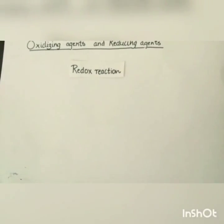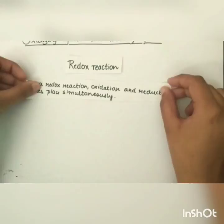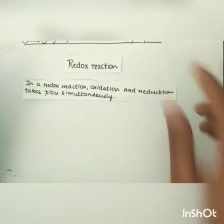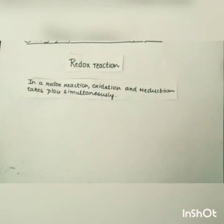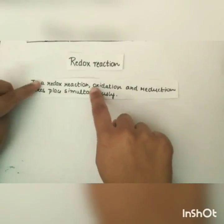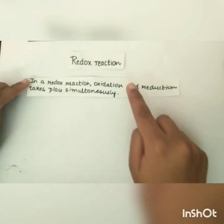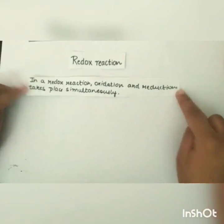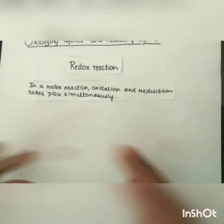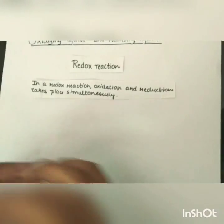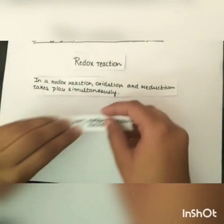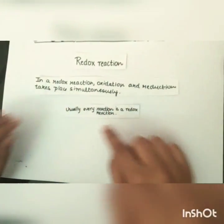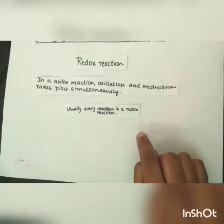Now let's talk about redox reactions. A redox reaction is a reaction in which oxidation as well as reduction take place simultaneously. Usually, every reaction is a redox reaction. There's an example for you.